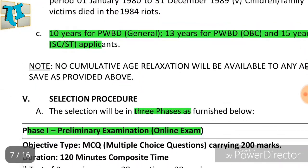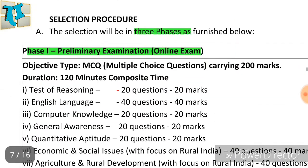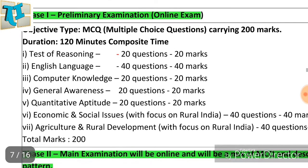The preliminary exam has 2 different sections. Reasoning: 20 questions, 20 marks. English Language: 40 questions, 40 marks. Computer Knowledge: 20 questions, 20 marks. General Awareness: 20 questions, 20 marks. Quantitative Aptitude: 20 questions, 20 marks.